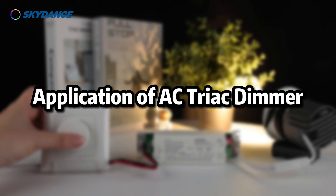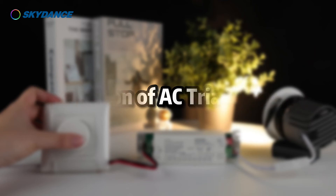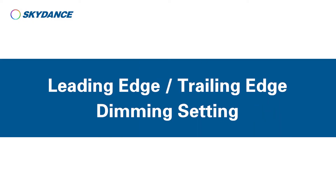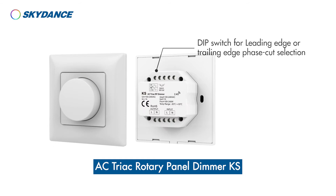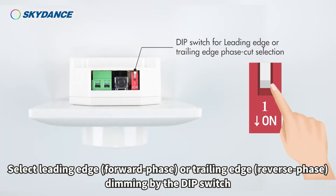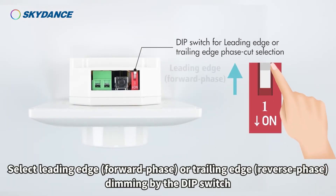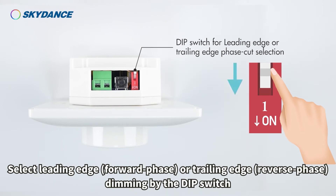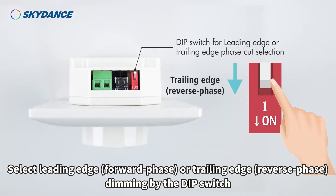Application of AC triad dimmer. Select leading edge, forward phase, or trailing edge, reverse phase dimming by the DIP switch.